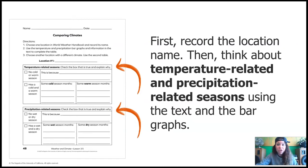And remember, first you're going to record the location name here, which is Akumal, Mexico. And then I want you to do this temperature-related season. So what you're going to do is you're going to decide, does Akumal have no cold or warm season or does it have a cold and warm season? So you're going to put an X or like a check, whatever you want to do, in one of those two boxes. And then you're going to fill in the part next to it for whichever one you choose. So you only do the top or the bottom. Does that make sense?